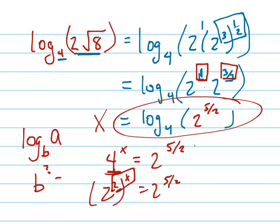So, again, continuing on. I'll continue up here. 2 to the 2X equals 2 to the 5 halves. So 2X equals 5 halves.